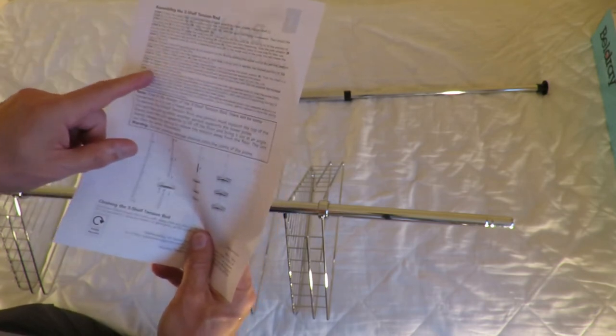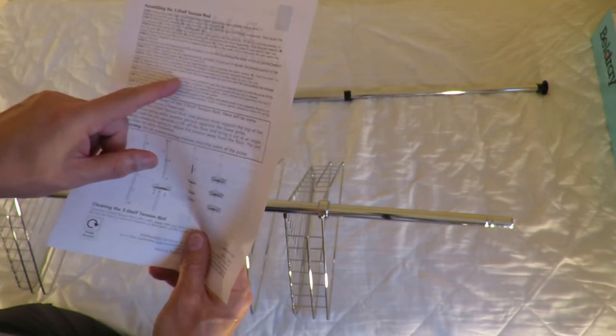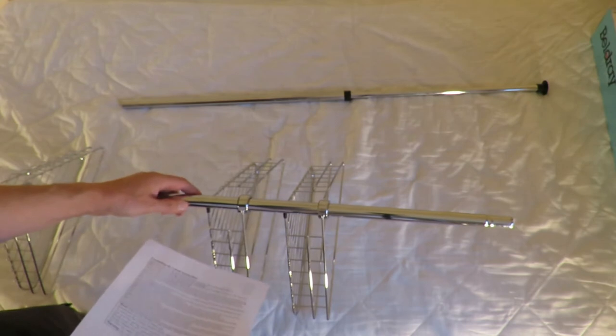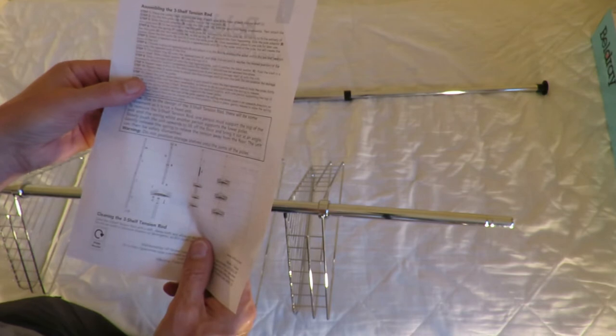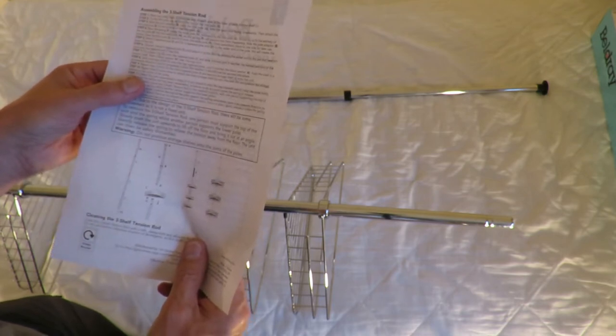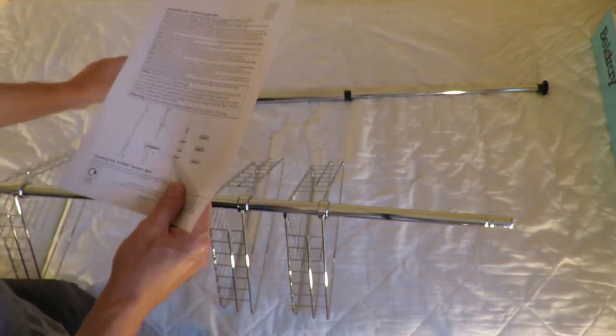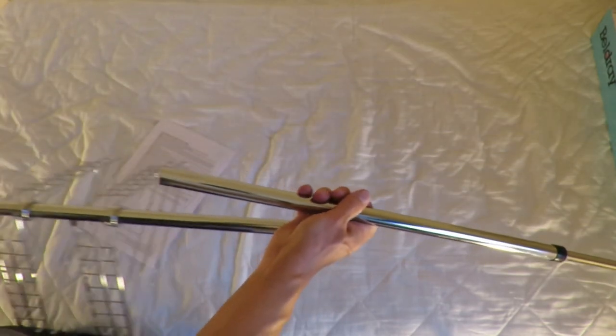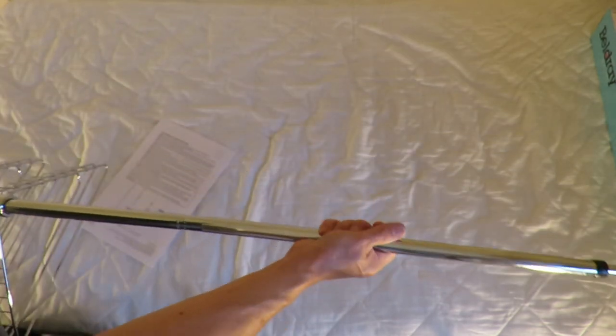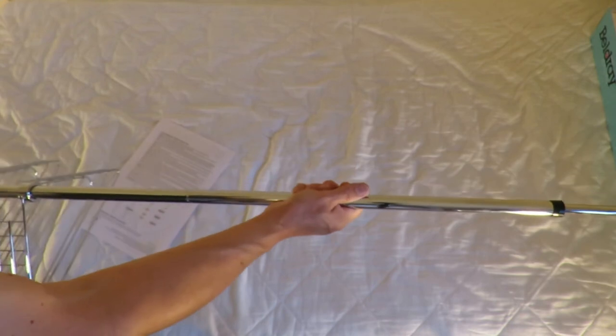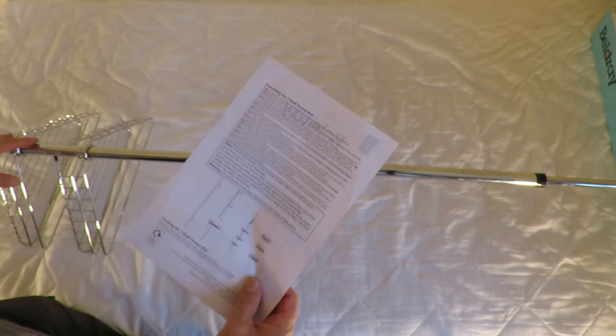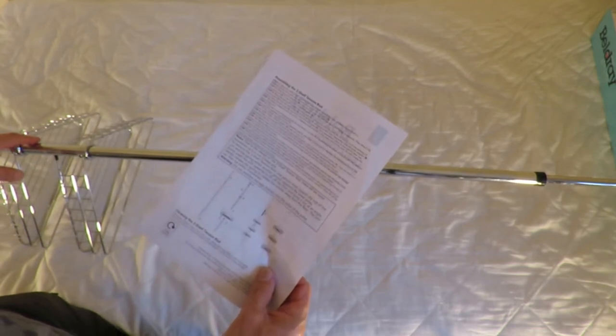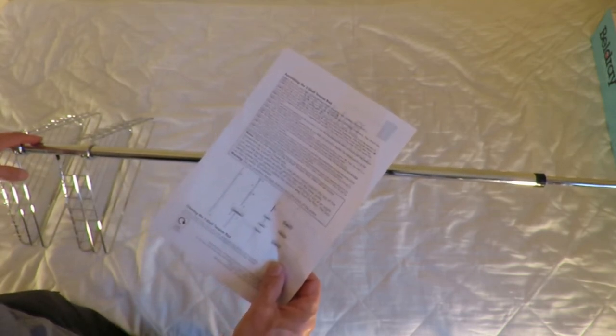Right, we've done that. Do not position the storage shelves on the joints of the poles, not right where they join. Select the pole assembled in steps 2 and 4, and attach it to the top, so that is going on there.